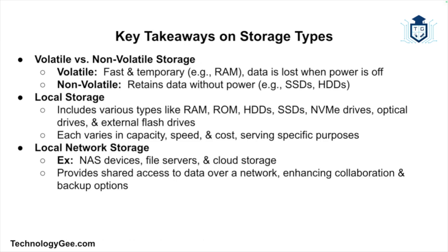To recap: volatile storage like RAM is fast and temporary, while non-volatile storage like SSDs and HDDs retains data even without power. Local storage includes RAM, hard disk drives, solid state drives, NVMe drives, optical drives, and external flash drives, each serving unique roles based on capacity, speed, and cost. Local network storage comprises NAS devices, file servers, and cloud storage, offering shared access to data over a network. Understanding these storage types is crucial for the CompTIA Tech Plus certification exam.